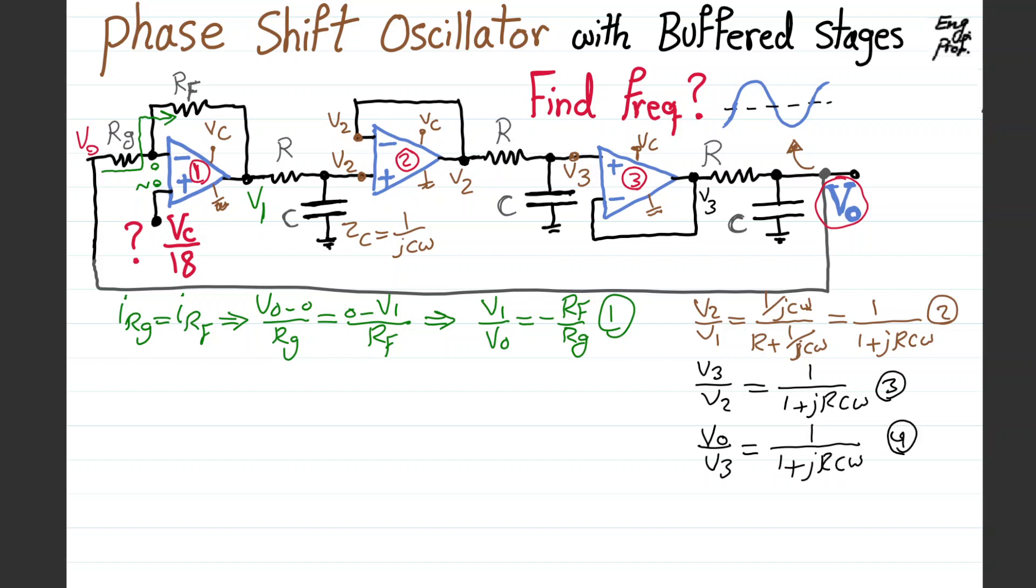Vout over V3 equals one over one plus jRC omega, equation number four. We started from Vout, looped back, and got back to Vout. Therefore the loop gain is simply the product of all these equations.